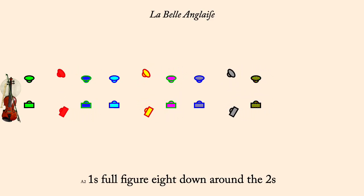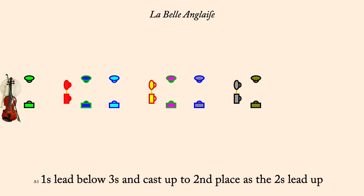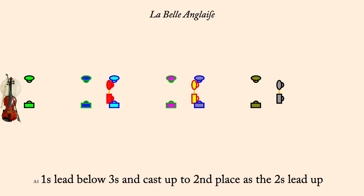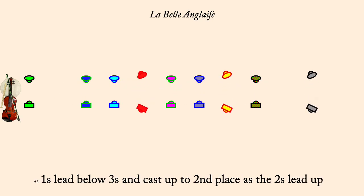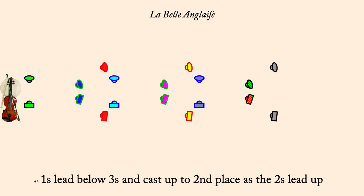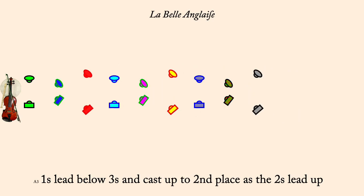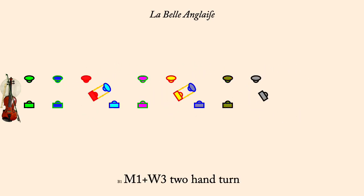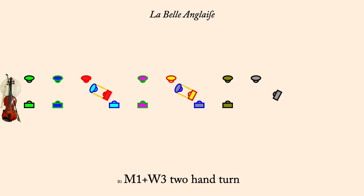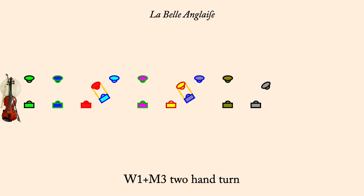Ones lead below threes and cast to second place. Man one, woman three, two-hand turn. Woman one and man three, two-hand turn.